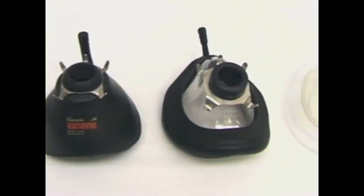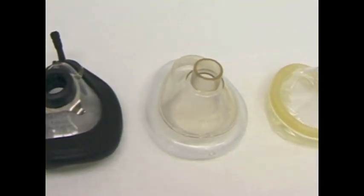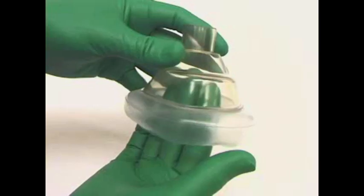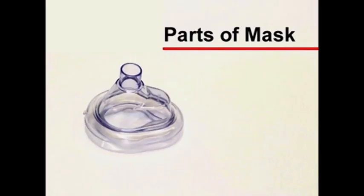There are many types of face masks, varying in design, size, and construction materials. Transparent masks are preferred because they allow for inspection of lip color, condensation, secretions, and vomitus. Face masks consist of three parts: the rim, the body, and the connector.